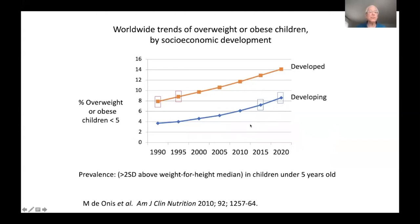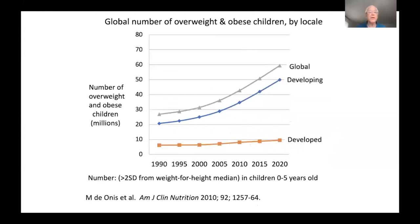These are the rates of overweight. How about the global numbers of overweight and obese children? Most of the children in the world who are overweight are in developing countries, because that's where most of the children in the world live. By around now, we have about 50 million overweight and obese children under the age of five, and the numbers are going up.